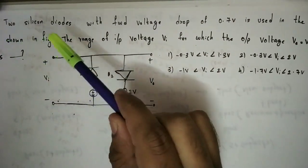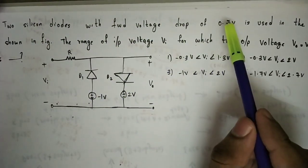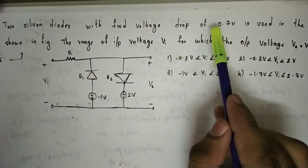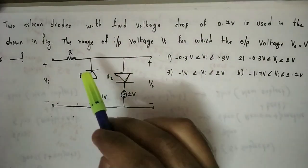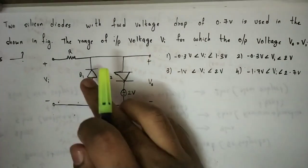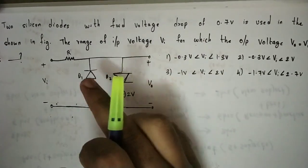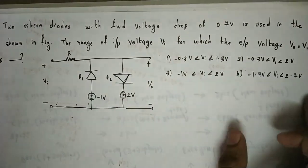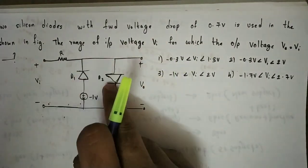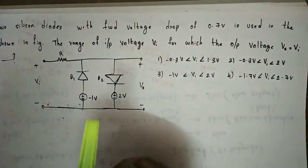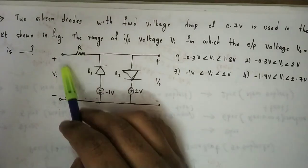The first question involves two silicon diodes, D1 and D2, with a forward voltage drop of 0.7V. Silicon diodes have a cut-in voltage of 0.7V. This tells us these are not ideal diodes — they are practical diodes. These practical diodes are used in the circuit shown in the figure.